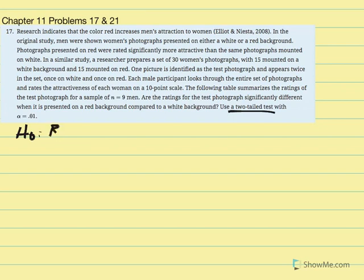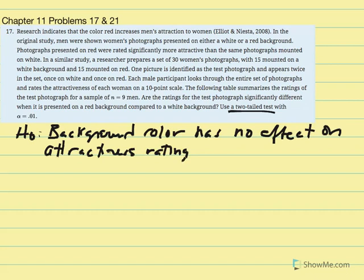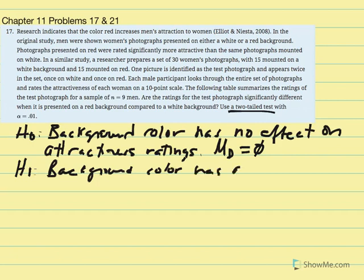We're conducting a two-tail test, so the null hypothesis is that background color has no effect on attractiveness ratings. Regardless of whether the men are looking at a woman's picture mounted on the red or white background, the color will have no effect on their rating. Therefore, mu difference is equal to zero.